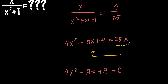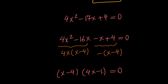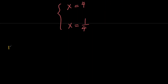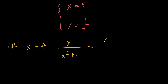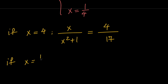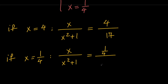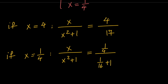Now remember that we want to evaluate x over x squared plus 1, so let's go ahead and do that. If x equals 4, then x over x squared plus 1 equals 4 over 16 plus 1. To simplify, let's multiply both the top and bottom by 16, giving us 4 on top and 1 plus 16 which is 17 on the bottom. So the answer is 4 over 17.